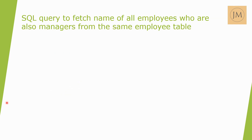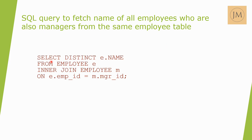The next question: SQL query to fetch names of all employees who are also managers from the same employee table. Using a self-join: SELECT DISTINCT e.name FROM employee e INNER JOIN employee m ON e.employee_id = m.manager_id. This matches records where an employee's ID equals a manager ID in the same table.